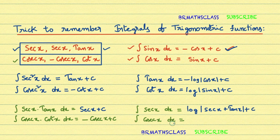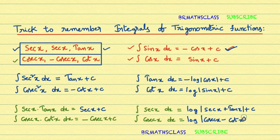Integral of cosecant x dx — this is a slightly tricky one, you need to remember it carefully. You observe the second row of the box: cosecant x minus cot x. So integral of cosecant x dx is log |cosecant x minus cot x| + c.